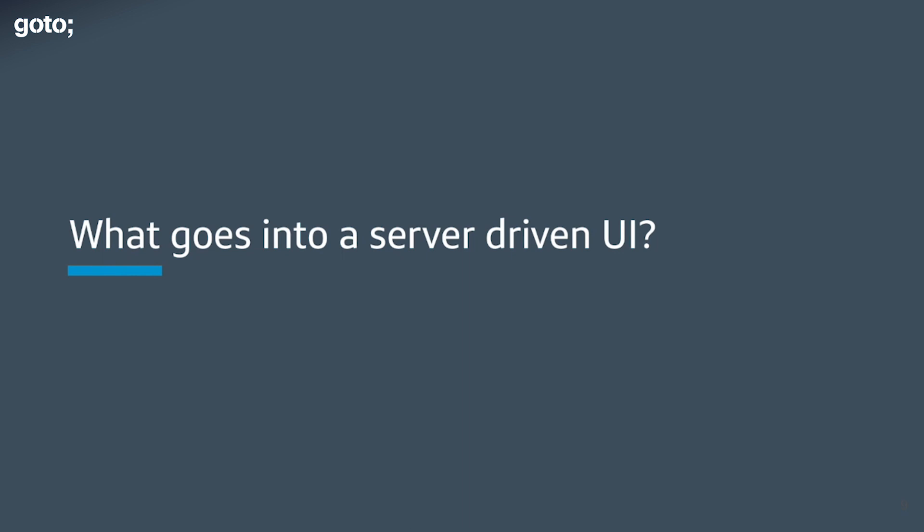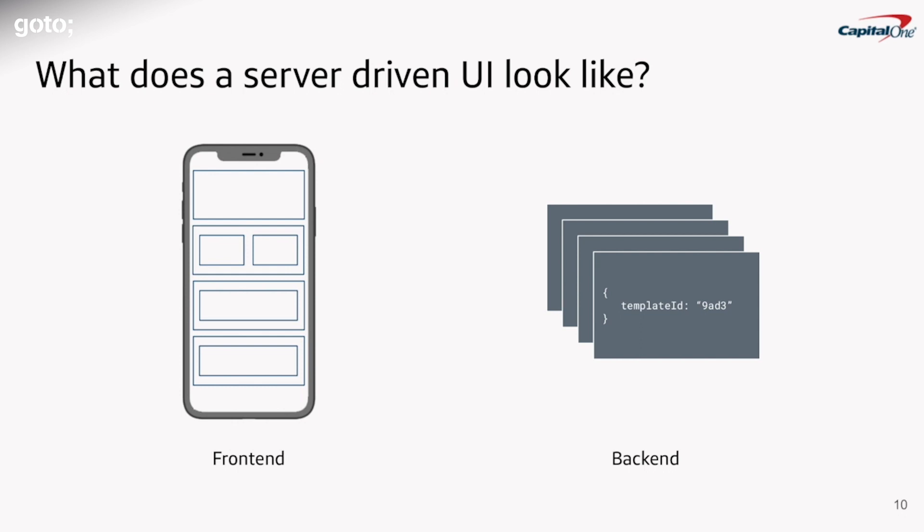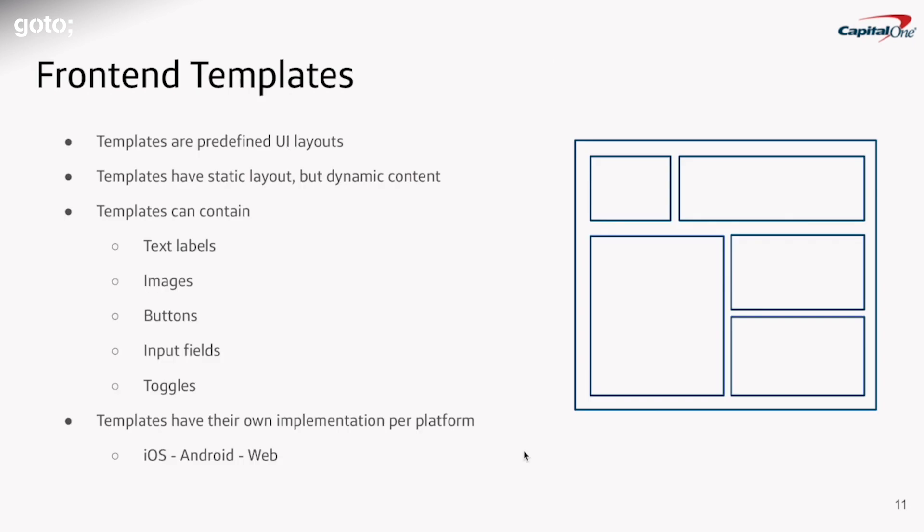Let's talk about exactly what goes into a server-driven UI. We can divide it into two components: the frontend, which is composed of templates, and a backend that supplies data and content to those templates. Templates have predefined UI layouts — the layouts are static, meaning the relationship between labels and images is the same regardless of platform, but the content delivered is dynamic from the server. Templates can contain text labels, images, buttons, and any typical UI element. Templates have their own implementations per platform, so you'll have different code for iOS, Android, and web components.